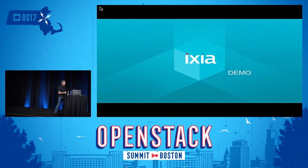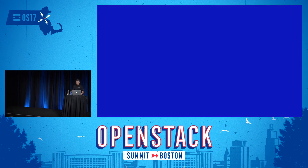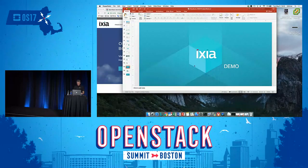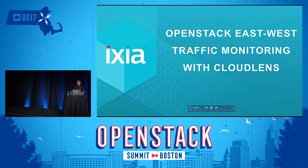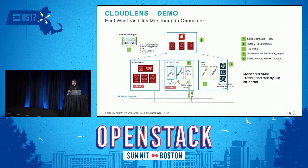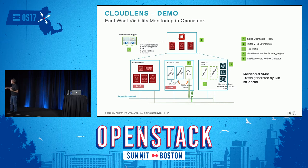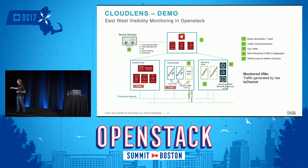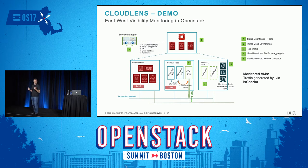Now I'm going to switch to a demo. I was not brave enough to do it live, so I have a recorded demo. We have an OpenStack environment with a controller node and a compute node. We are monitoring traffic between two VMs, generating traffic with an IxChariot tool that simulates enterprise mixed traffic. We tap it using Tap-as-a-Service — a service VM installed in the compute node leveraging the TaaS framework — and send that traffic via GRE tunnel to our CloudLens AppStack component.